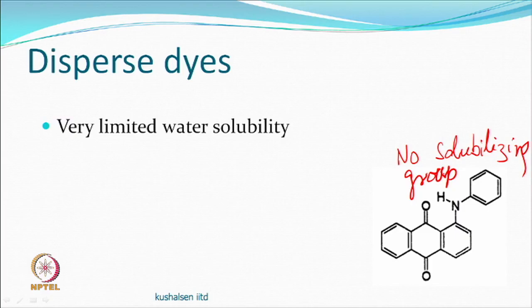Disperse dyes do not have zero solubility — they have limited solubility. If absolutely insoluble, they would be pigments. The trick is that most dye remains in particulate form while a small amount dissolves; at higher temperature, solubility increases even in aqueous medium. The dissolved molecules then diffuse into the fibre.